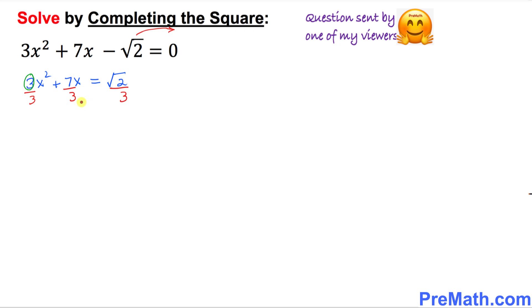Each and every term must be divided by 3. So we got simply x² + (7/3)x = √2/3. So far so good.